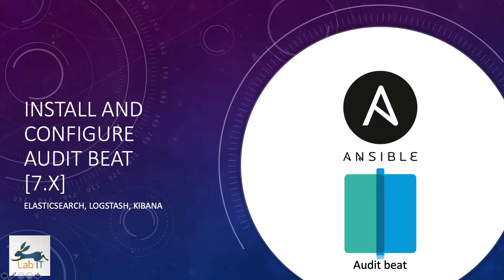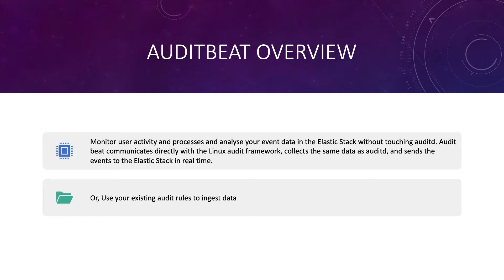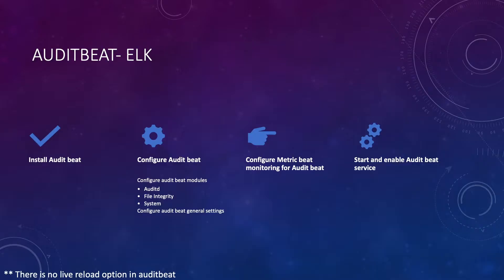In this video let's install and configure auditbeat. Auditbeat allows you to monitor user activity and processes in your Linux system. It communicates directly with the Linux auditd framework and sends the data it has collected to Elasticsearch in real time. There are four steps: first we'll install auditbeat, second we'll configure auditbeat and configure the three modules — auditd, file integrity, and system module. After that we'll configure metricbeat to monitor the auditbeat service.